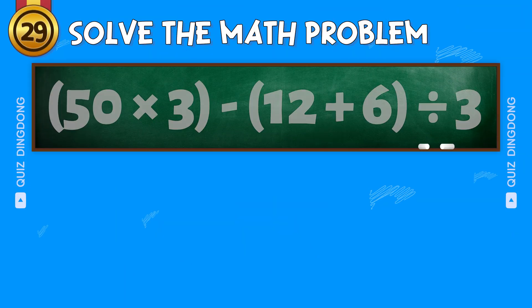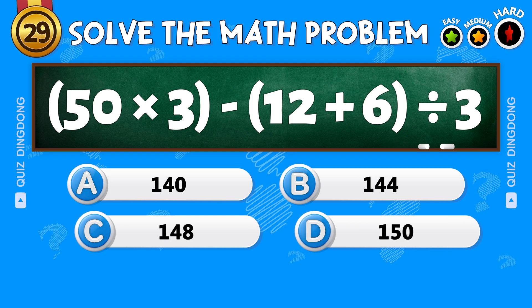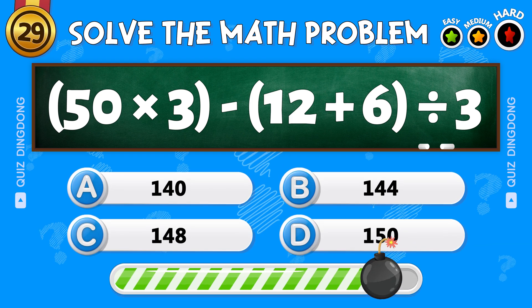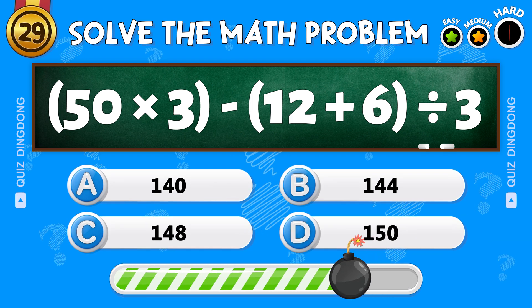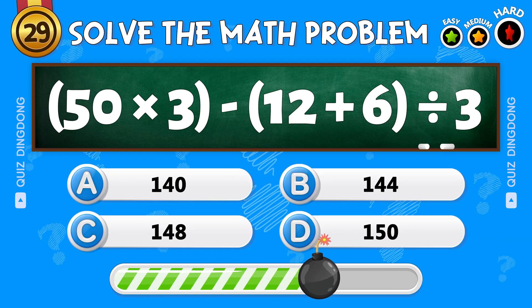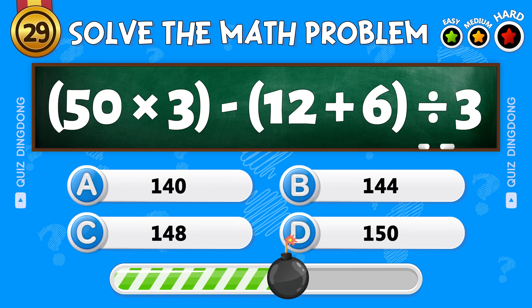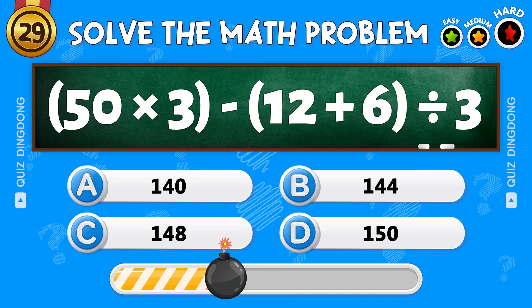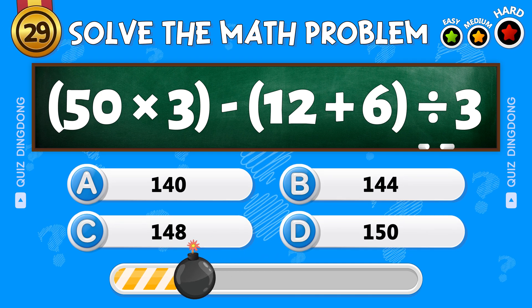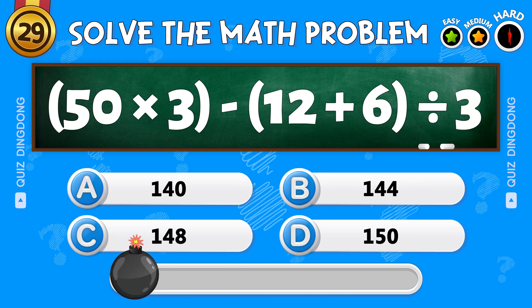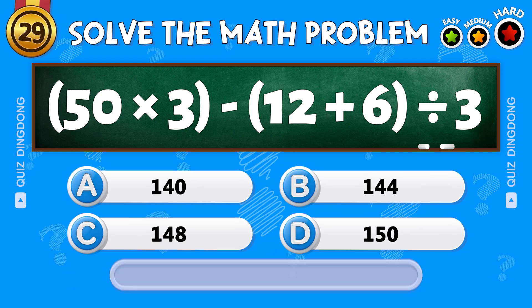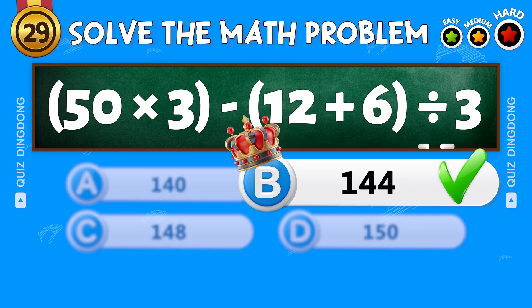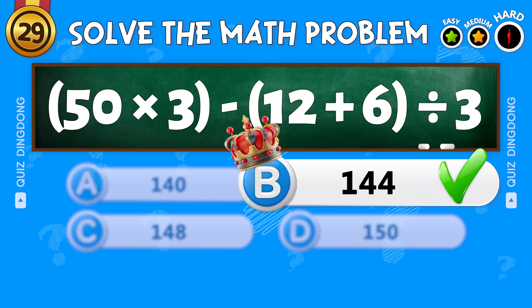Second to last! What is 50 times 3 minus 12 plus 6 divided by 3? Great work! The answer is 144!